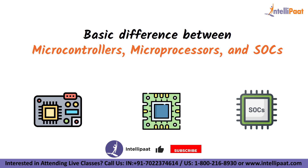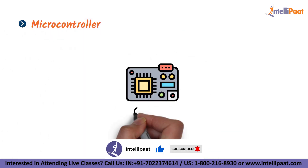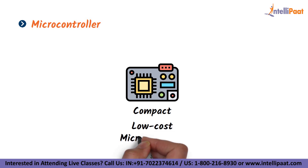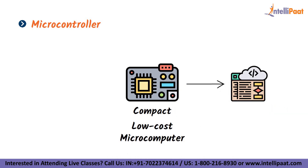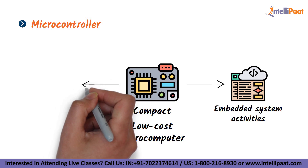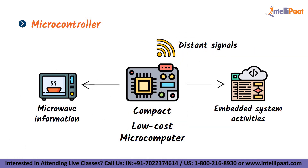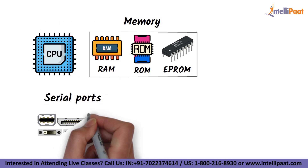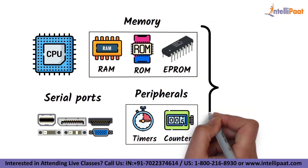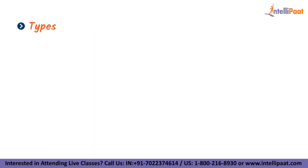Now let's try to understand each of them in a better way. First comes the microcontroller. A microcontroller is a compact, low-cost microcomputer designed to perform certain embedded system activities such as displaying microwave information, receiving distant signals, and so on. The CPU, memory, serial ports, peripherals, and other components make up a generic microcontroller.